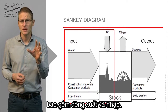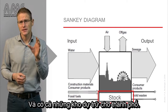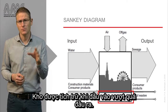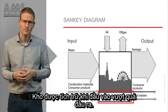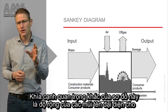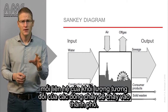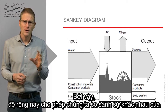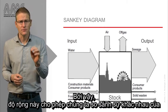It has input and output flows and it has stocks that accumulate in the city. Stocks accumulate when inputs exceed output flows. The other important aspect of this diagram is that the width of the arrows represents the relative weight of the flows going into a city. Therefore, the width of an arrow enables us to compare different flows.